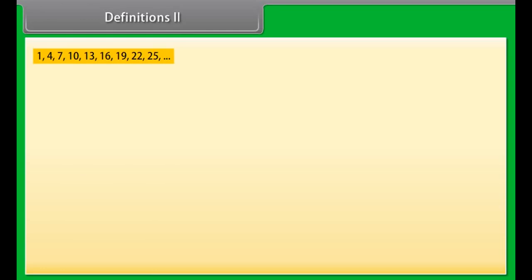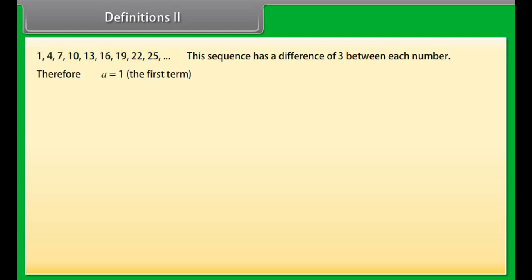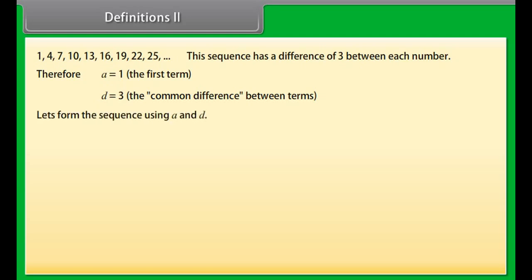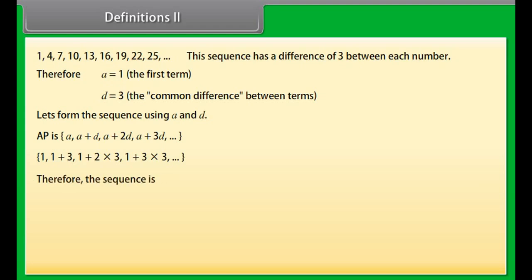Look at this example. We can see that this sequence has a difference of 3 between each number. Therefore A is equal to 1 (the first term) and D is equal to 3 (the common difference). Substituting the values of A and D into the general form, we get 1, 1+3, 1+2×3, 1+3×3, and so on, which gives the sequence 1, 4, 7, 10, and so on.